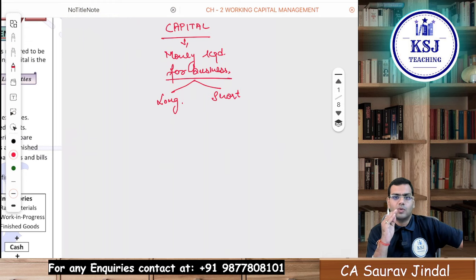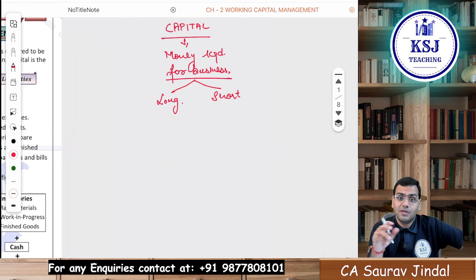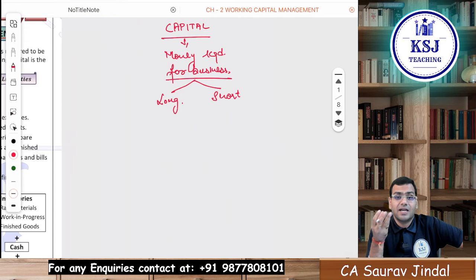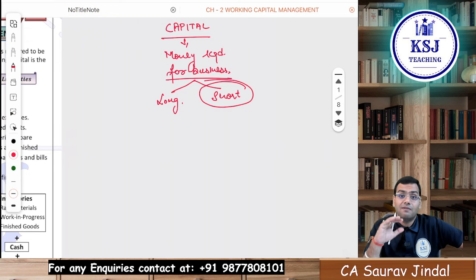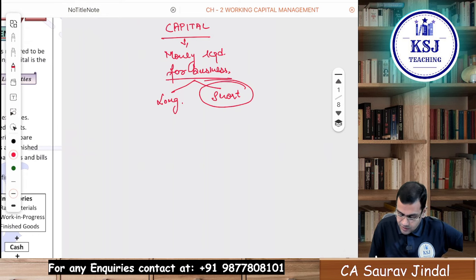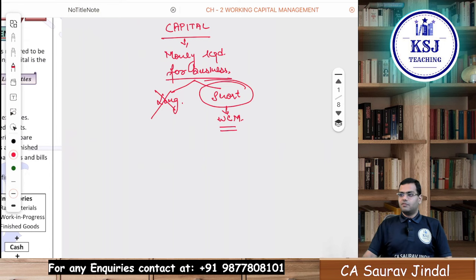You also have two requirements — one is the requirement of money to buy a car, which is a long-term requirement. Another requirement is to buy daily utilities: rice, flour, pulses — that is a short-term requirement. When we talk about working capital, we deal with this short-term requirement of money to deal with day-to-day activities.